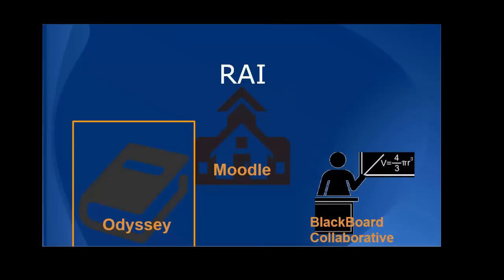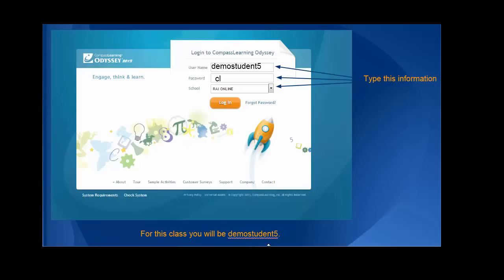Now, let's take a look at our digital curriculum. At RAI, we use a curriculum called Odyssey. Your teachers will give you assignments in Odyssey that you will complete. Let's take a look at what your board looks like for Odyssey.